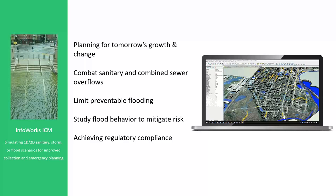It's a comprehensive H&H modeling package. You can use it for sanitary networks, combined networks, or stormwater networks. The whole idea is planning and analysis — looking at the effects of population growth on storm and sewer systems. ICM will do the modeling to identify risks for sanitary combined sewer overflows, and results can be used to limit preventable flooding and mitigate flood risk, including river flood risk, while achieving regulatory compliance.